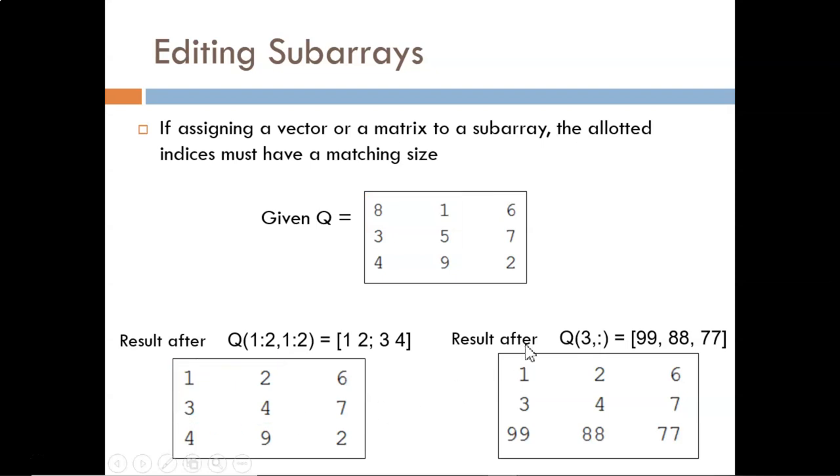Next, we are replacing the entire third row of matrix Q. This requires a row vector of length 3. The vector being passed in matches that size, so it is successfully entered.